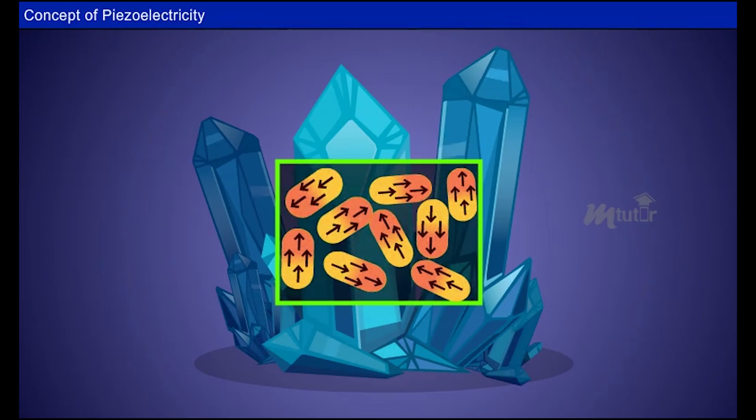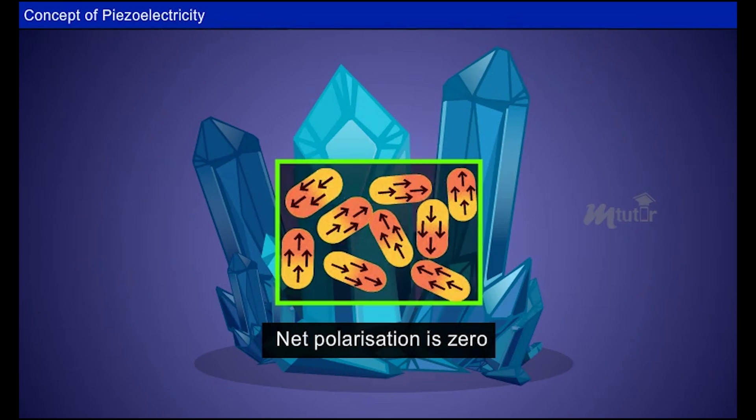So that net polarization of the crystal is zero and maintains symmetry. For net polarization to develop, the dipole formed must not be cancelled out by other dipoles in the crystal.